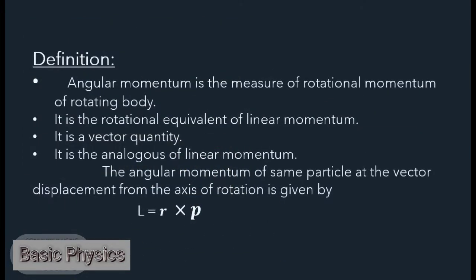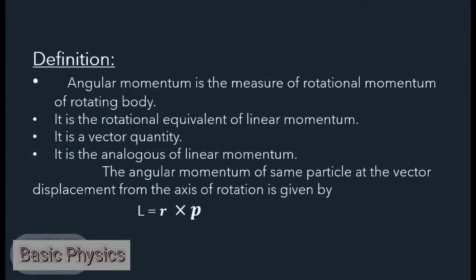Angular momentum is the measure of rotational momentum of a rotating body. It is the rotational equivalent of linear momentum. It is a vector quantity and is analogous to linear momentum.